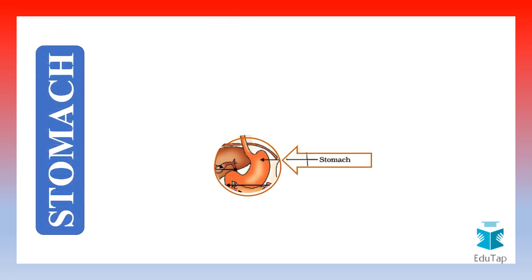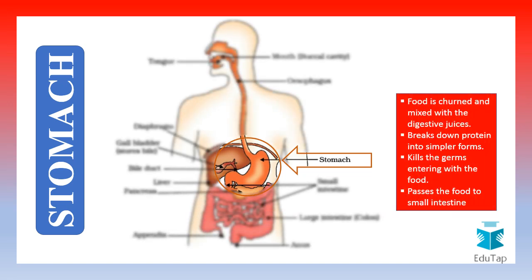Now let us see what happens inside the stomach. Inside the stomach, the food is churned and mixed with the digestive juices. These digestive juices essentially help to break down the proteins into simpler forms. Also, the acid in the stomach helps kill germs that might have entered the body with the food.